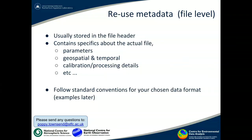Another type of metadata is the file-level metadata. This is very important for reuse of the data. Somebody reusing your data who wasn't involved in the original project will need to find out all the details about the data. This is usually stored in the file header and it contains the specifics about the actual file — the parameters and variables included, the geospatial and temporal information, calibration and processing details pertaining to this particular file. There are standard conventions for many data formats and examples will be shown later.